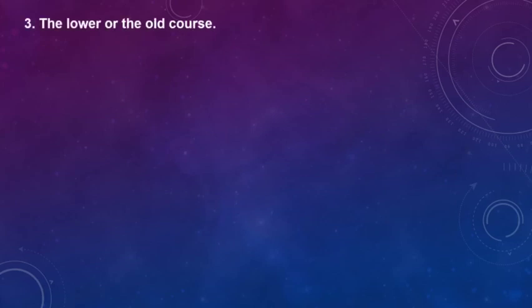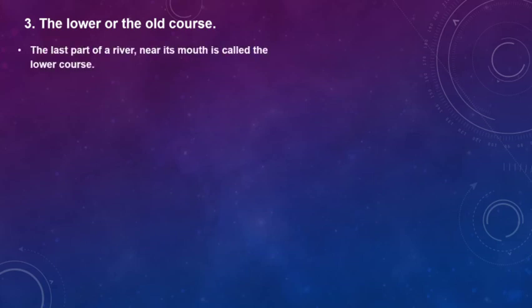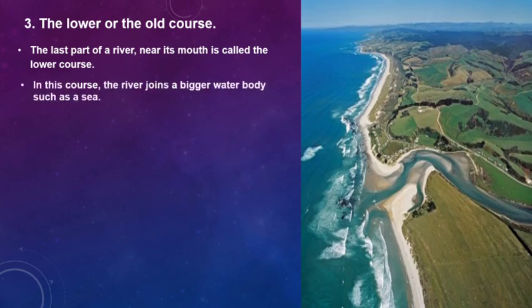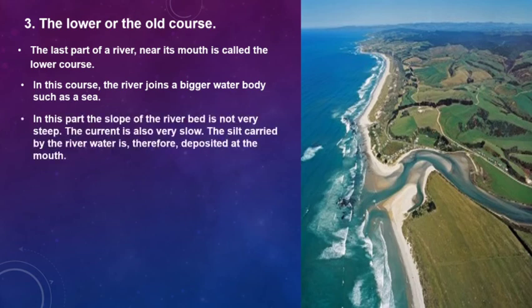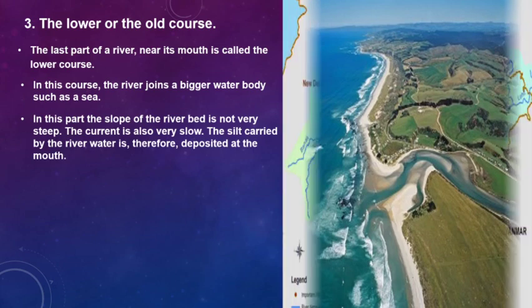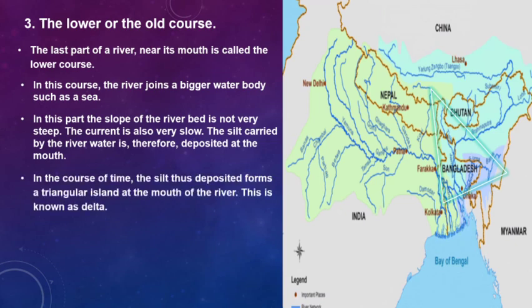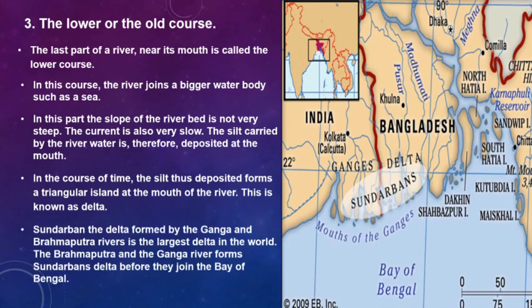Now let us move on to the lower or old course of a river. The last part of a river near its mouth is called the lower course. In this course the river joins a bigger water body. The slope of the river bed is not very steep and the current is also very slow. The silt carried by the river water is therefore deposited at the mouth. Over time, the silt deposited forms a triangular island at the mouth of the river — this is known as a delta. Sundarbans, the delta formed by the Ganga and the Brahmaputra rivers, is the largest delta in the world, formed before they join the Bay of Bengal.